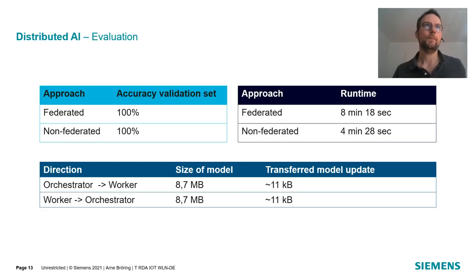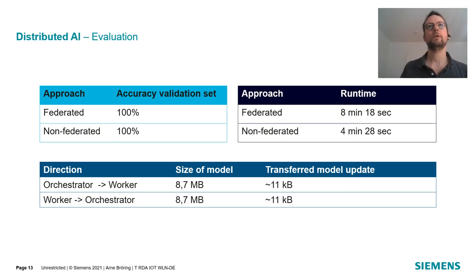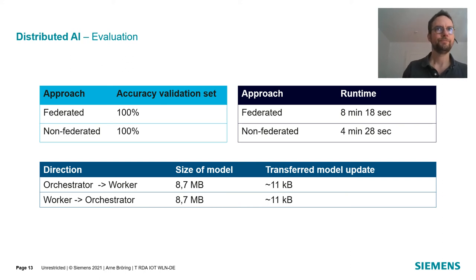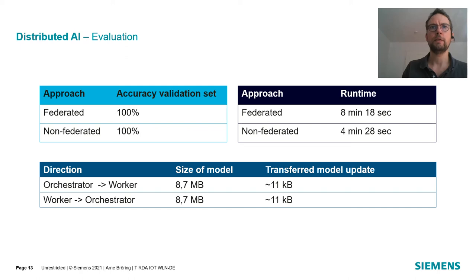Looking at the evaluation, our federated learning approach achieves 100% accuracy, the same as a non-federated approach that we also tried out. The federated one, however, takes quite a bit longer, due to the fact that we are waiting for the slowest worker each training epoch. Looking at the amount of data sent through the network, the size of the full model — which we don't send — is about 8.7 MB. What we do send is the model update after each retraining, which is about 11 KB, making it really low.